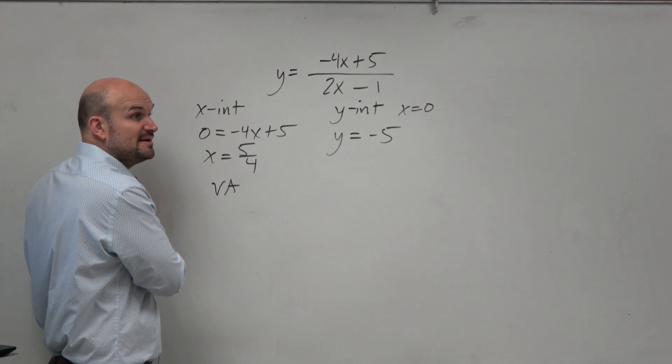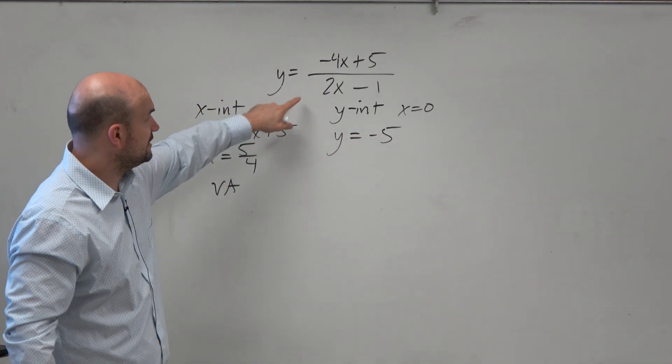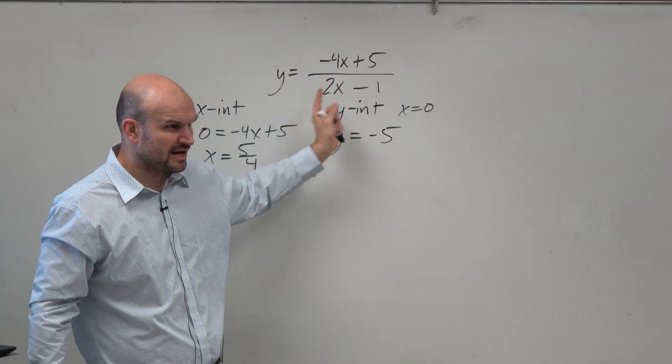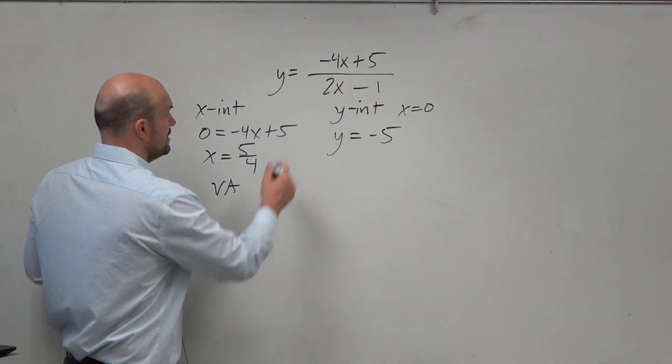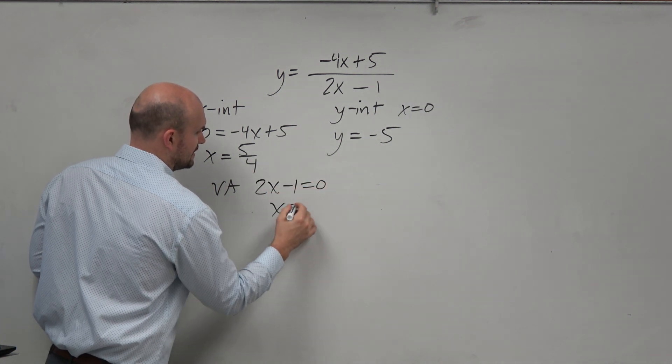Vertical asymptote is the values that make the denominator equal to 0, unless they get divided out. However, I look at this, am I really going to be dividing anything out? I can't really factor these any further, right? So we're good. So we're just going to set the denominator equal to 0 and solve.